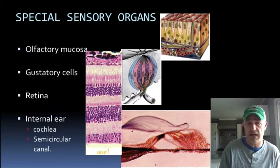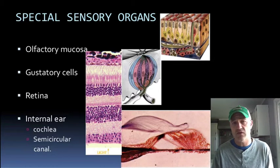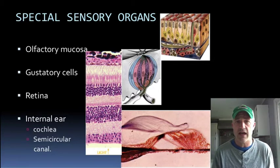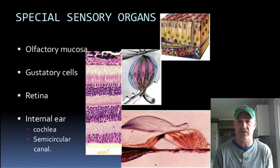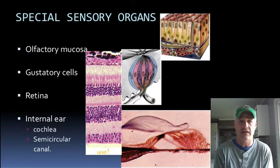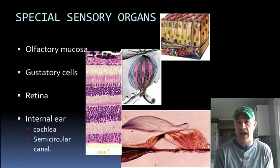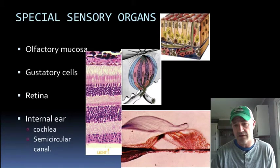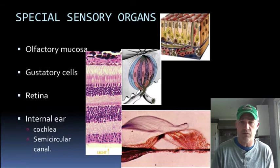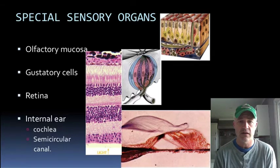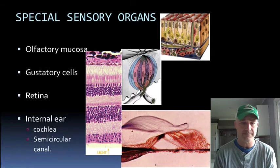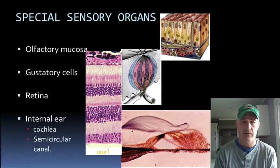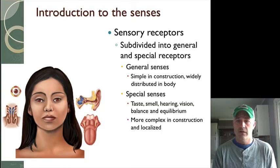On subsequent shows we'll take a look at the eye and some of its basic structures — it's pretty involved. Then we'll also look at the ear and the structures involved with that, specifically what you can see at the bottom of this image — the organ of Corti.